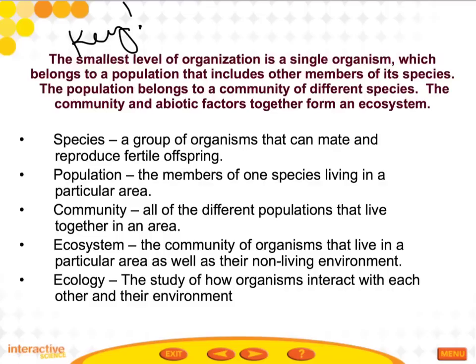There are a couple of key vocab words for this part of the unit. Species is a group of organisms that can mate and reproduce fertile offspring. Population is the members of one species living in a particular area. Community is all of the different populations that live together in an area. Ecosystem is the community of organisms that live in a particular area as well as their non-living environment — the abiotic factors.